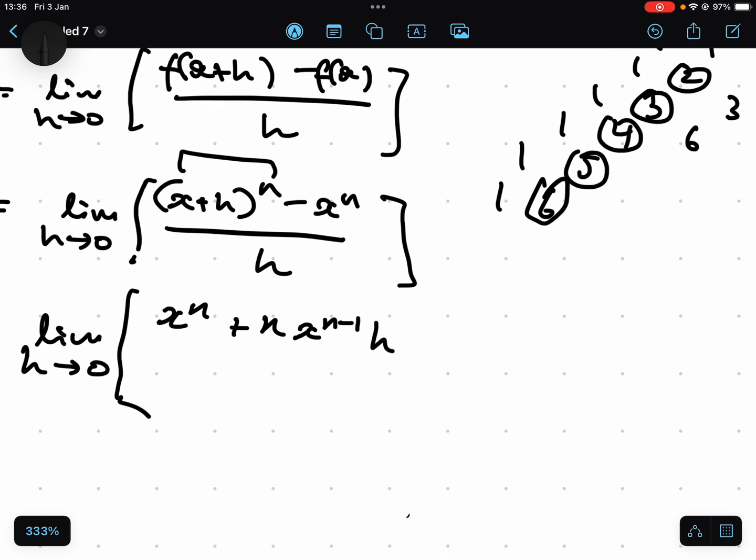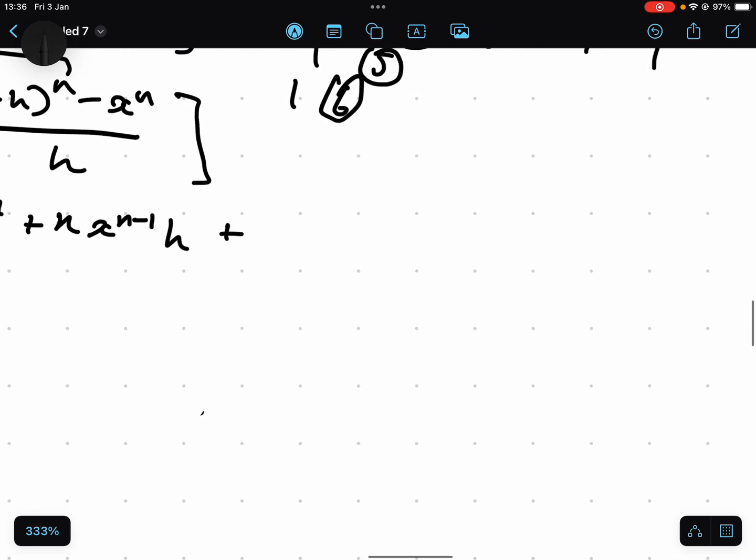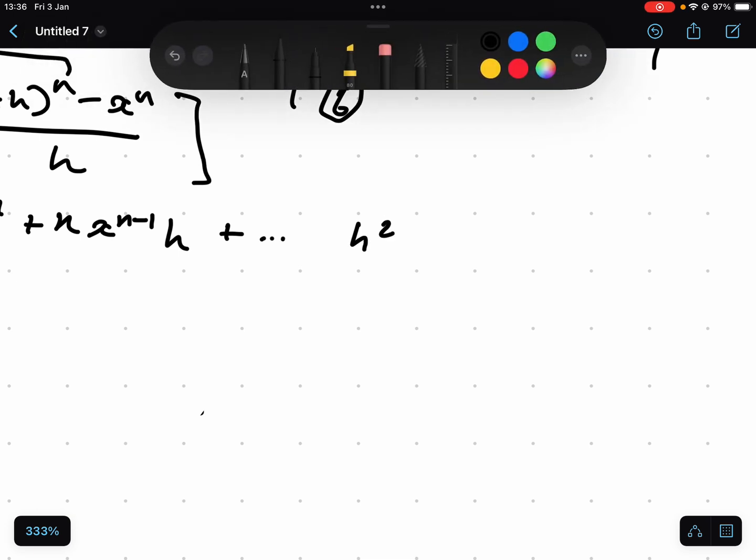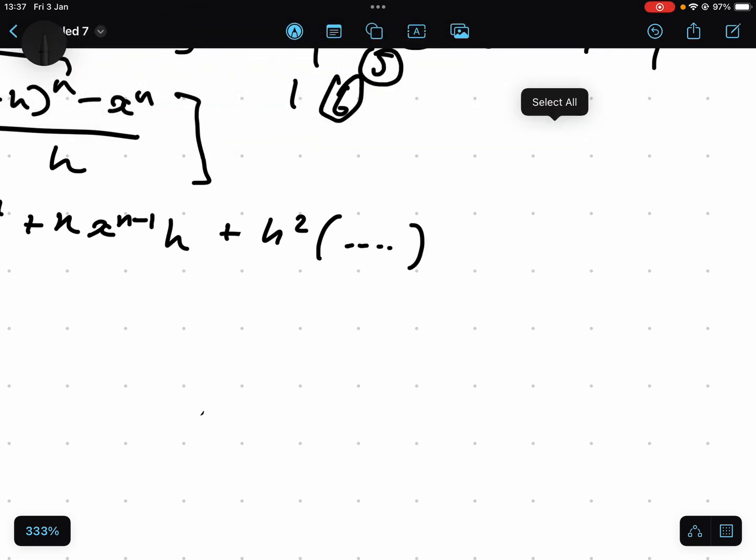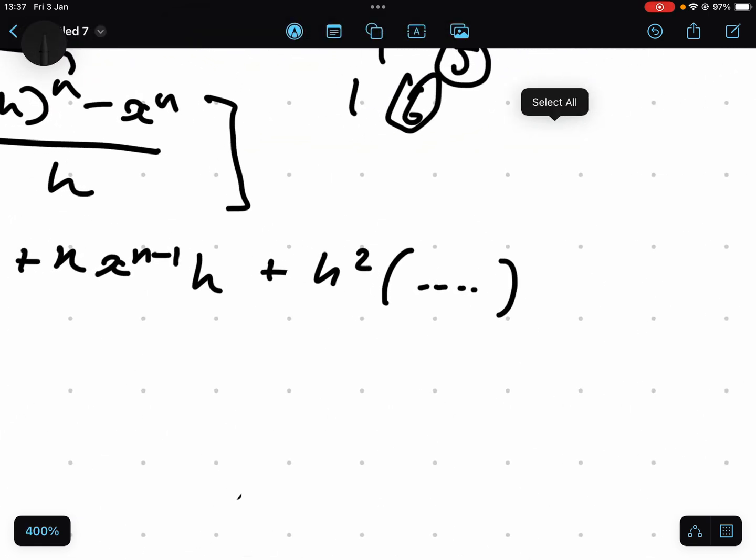And the rest of the stuff, I don't know what it is. But what I can do, I can definitely say for sure, the next one is going to be h squared. So what I can say for certain is that I can just factorize out h squared. So I'm going to have plus h squared times by a bunch of other things. I can say that for certain, because after this, it's going to increase in h squared.